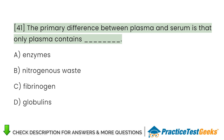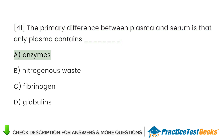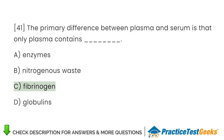The primary difference between plasma and serum is that only plasma contains A. Enzymes. B. Nitrogenous waste. C. Fibrinogen. D. Globulins.